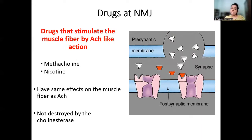The first group of drugs stimulate the muscle fiber by behaving like acetylcholine. Examples are methacholine and nicotine, which have the same effects on muscle as acetylcholine. Most importantly, they are not destroyed by cholinesterase.